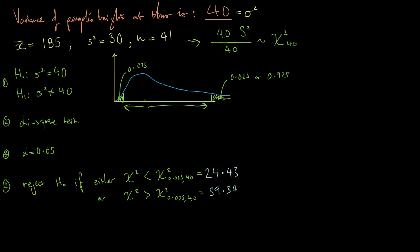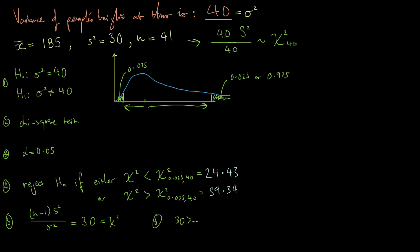Next, we calculate the chi-square statistic. The formula is (n minus 1) times the sample variance divided by the null hypothesis variance. In this case, since n minus 1 equals 40 and sigma squared null equals 40, the statistic simplifies to just our sample variance: 30. Now, 30 is not less than 24.43 and not greater than 59.34, so we are in neither the left-hand nor the right-hand rejection region.